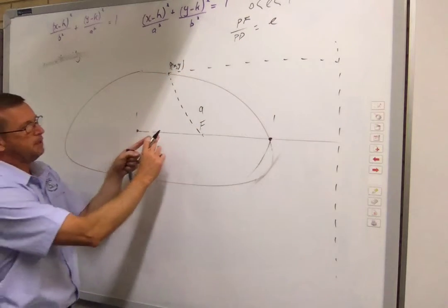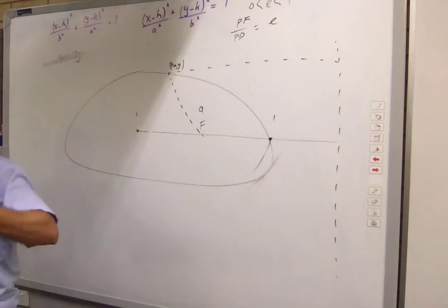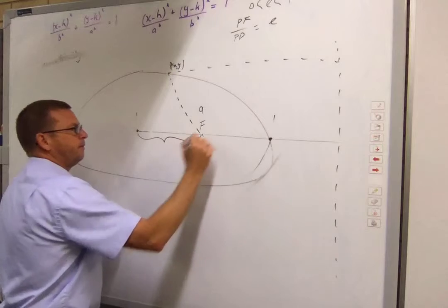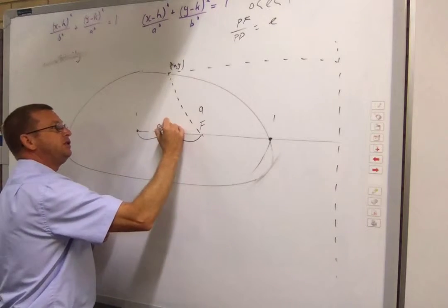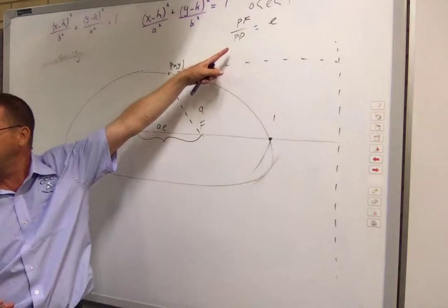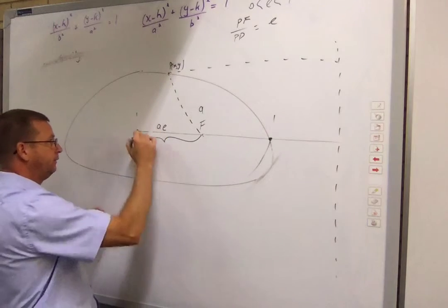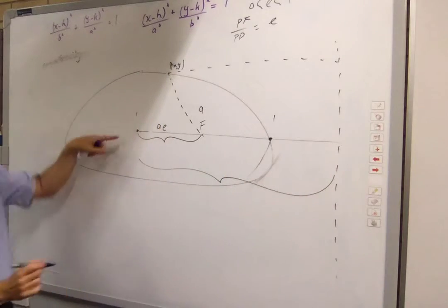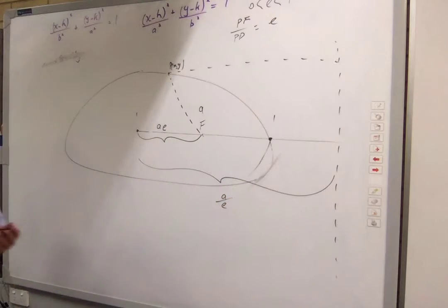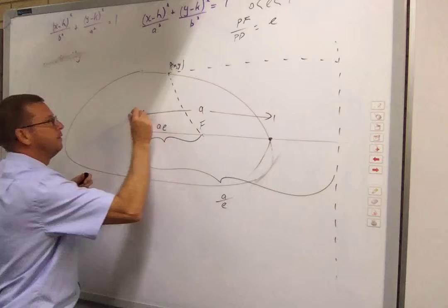So the E is something that helps us determine where my focus is, and where my directrix is. The distance from the center to the focus is a times E. And if I go from the center to the directrix, that's A on E. Can you see that that's A? So A is from the center to the point.